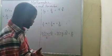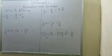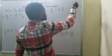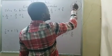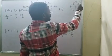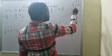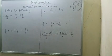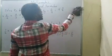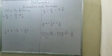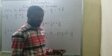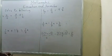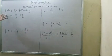Let me briefly explain what a fraction is. A fraction is one part out of a whole — for instance, if I divide a circle into four equal parts, one part is 1 out of 4, written as 1/4. Fractions involve a denominator and a numerator. We also have types of fractions: proper fractions, improper fractions, and mixed fractions.